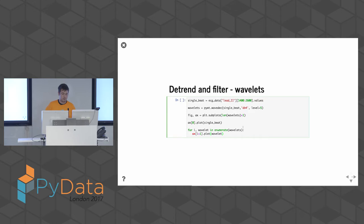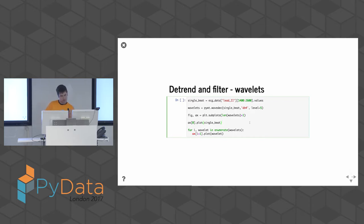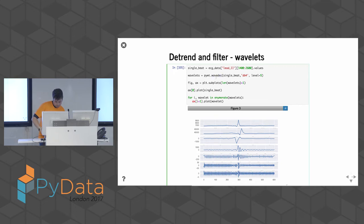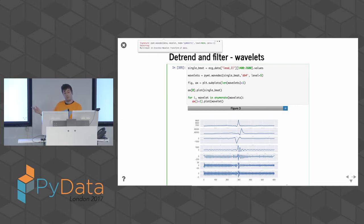Wavelets are what I'm coming to now. Butterworth filters are what you'd use in a medical device, but primary research has basically found that wavelets are fantastic both for filtering and detrending the signal, and for identifying peaks within it. Here I've taken a single slice of the ECG — found where a beat was, sliced that value — and then performed a wavelet decomposition. This uses the PyWavelets package, which gives you most of what the wavelet toolbox inside MATLAB provides.